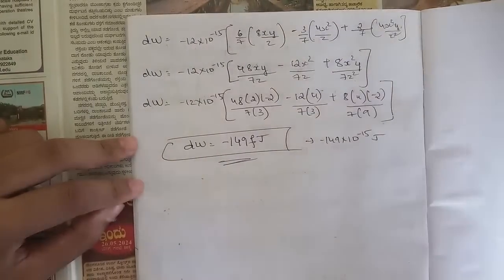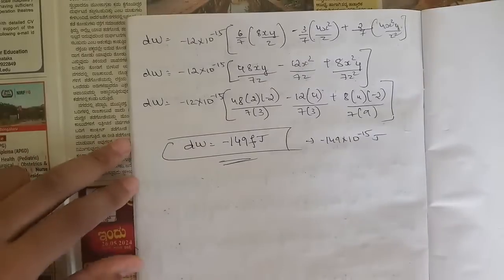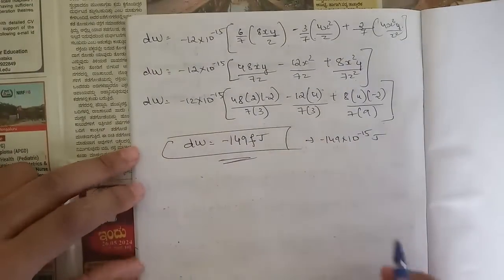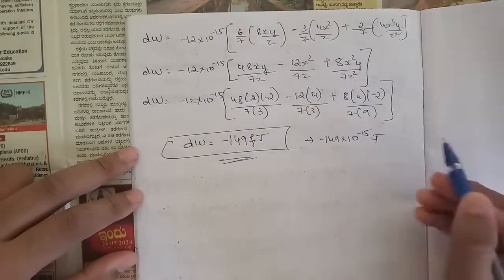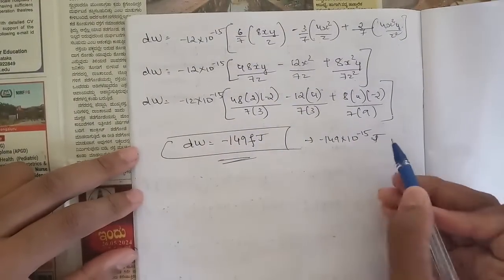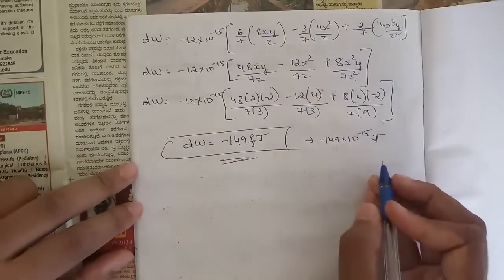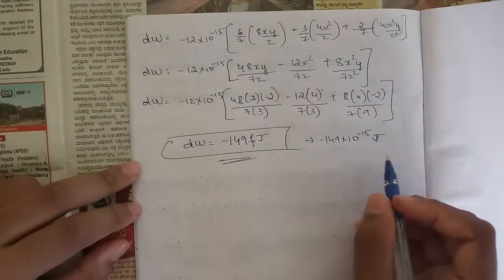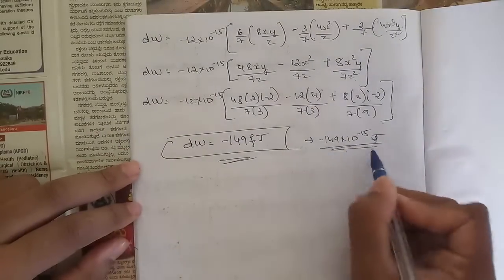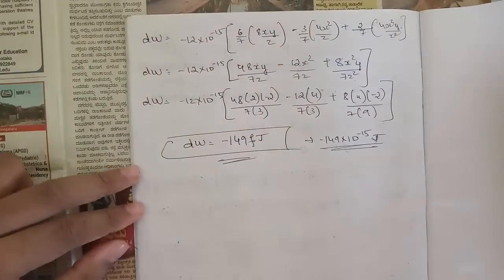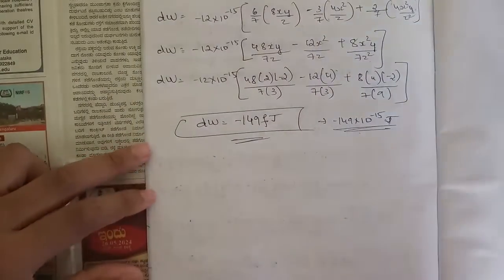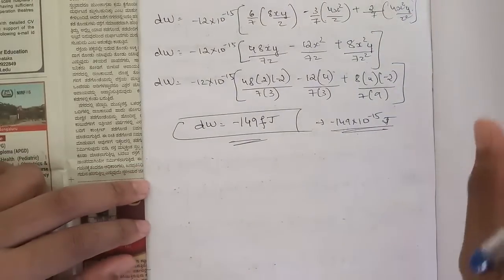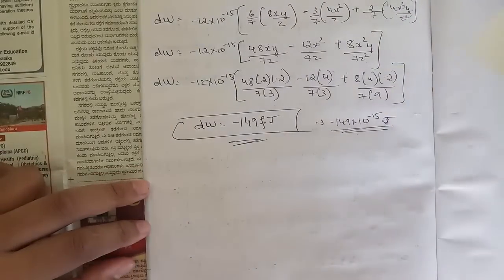So the answer for sub-question 2 is −149×10⁻¹⁵ joules. Joules is the SI unit of work — J stands for joules. This is the answer for the second sub-question. Let's go to the third sub-question now.